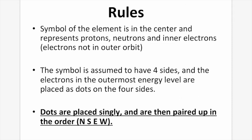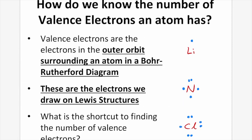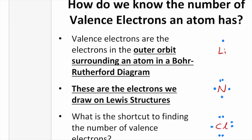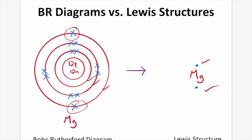So for instance, we would go north, south, east, west, and then we would start pairing them up: north, south, east, west. But how do we know the number of valence electrons an atom has? Valence electrons are the electrons in the outer orbit in a Bohr-Rutherford diagram — these are the electrons we draw in our Lewis structure. You could draw the entire Bohr-Rutherford diagram and then transition that information over to the Lewis structure, like we did on this slide.